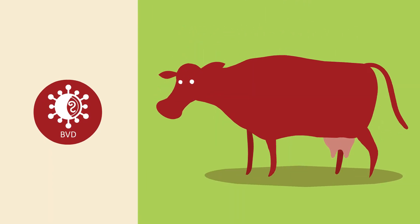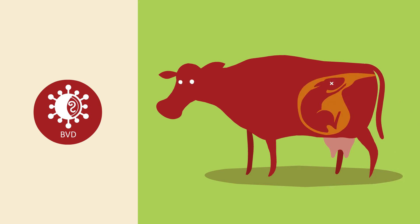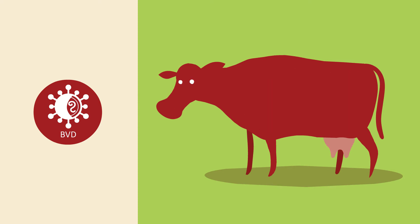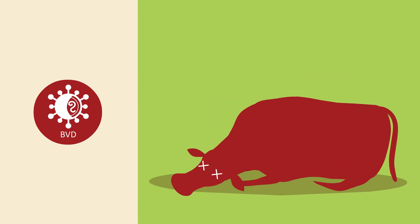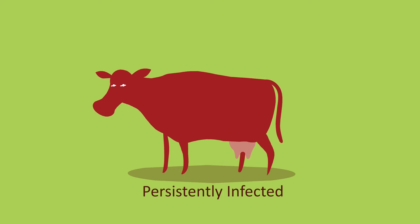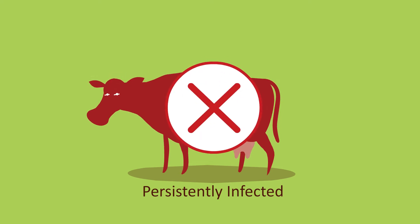BVD is a contagious viral disease of cattle. The disease may cause infertility, abortion, respiratory and gut disease, and in some severe cases can be fatal. The main source of the virus is from persistently infected animals, known as PIs — animals which have been infected in the uterus before birth. PIs will always carry the virus, and therefore it's really important that these animals are culled.